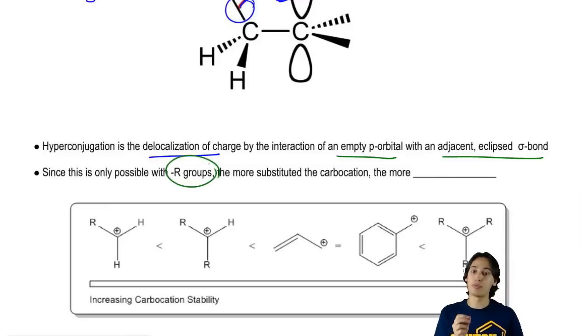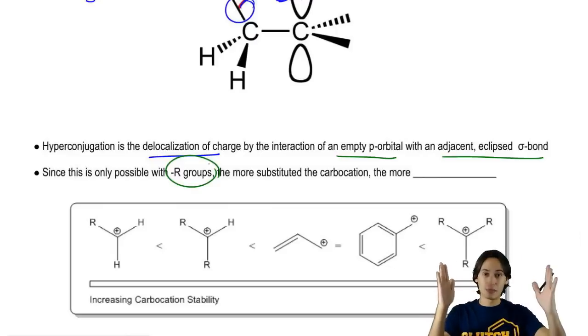It turns out that there's only one group that's really good at having eclipsed sigma bonds to P orbitals and that's R groups because R groups, remember they always have hydrogens coming off of them. So those hydrogens are going to be able to eclipse with the P orbital.